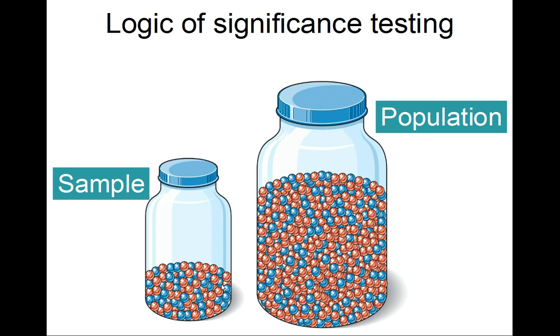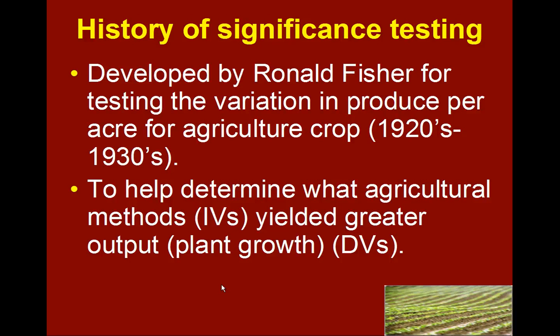Then we can count up the reds and the blues in the sample and make an inference based on laws around random variability. We can make an inference and be right the vast majority of the time as to whether there is a difference in the population. So that's the logic involved.